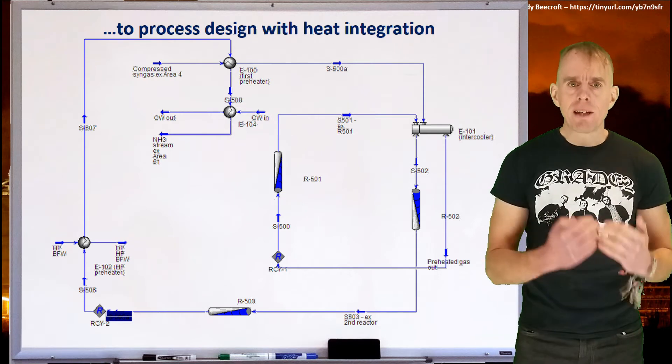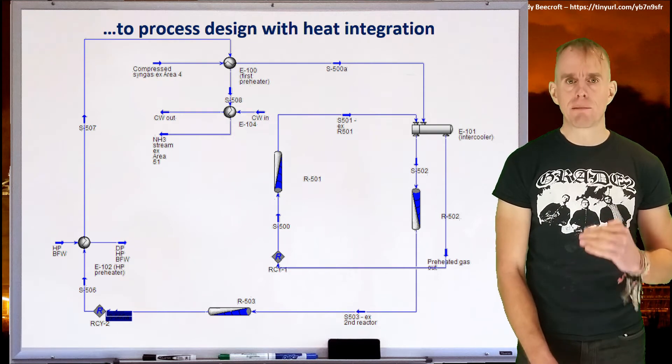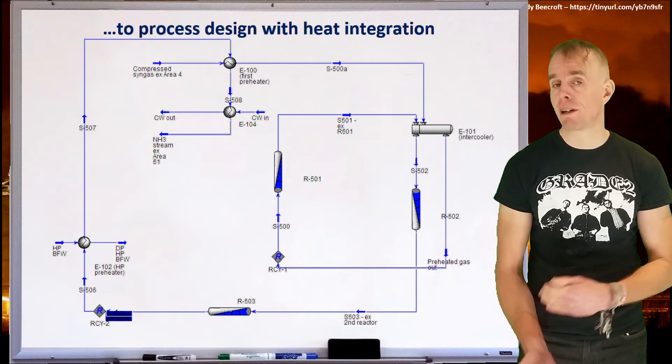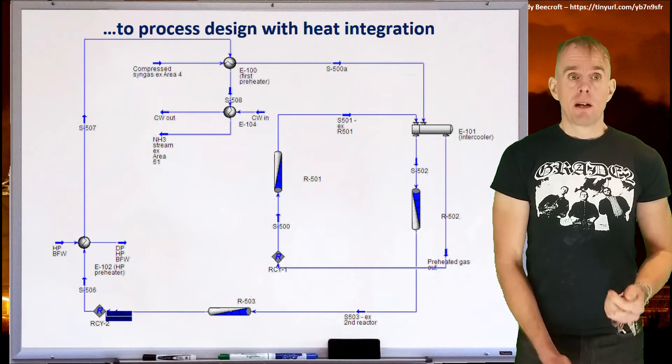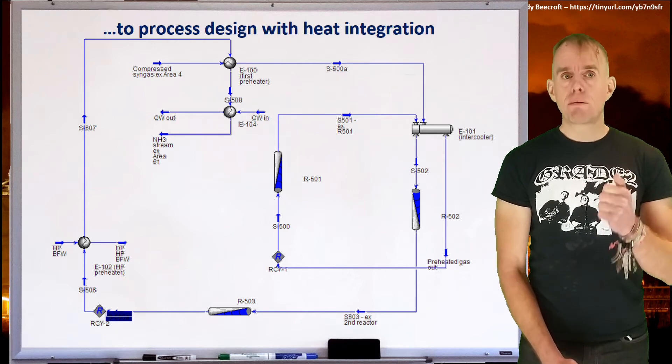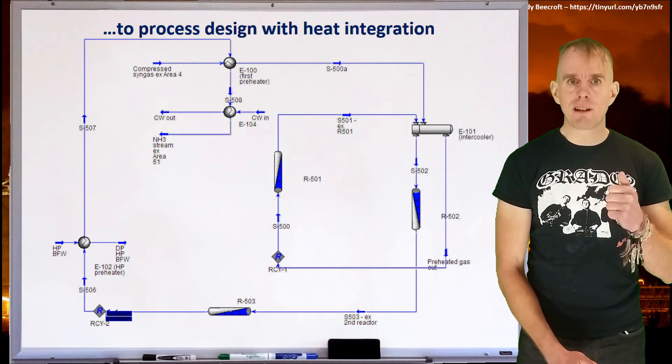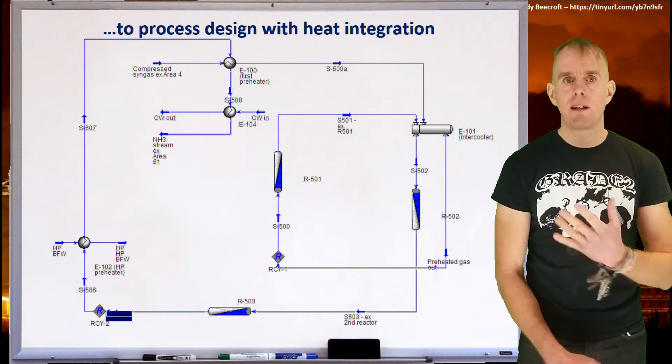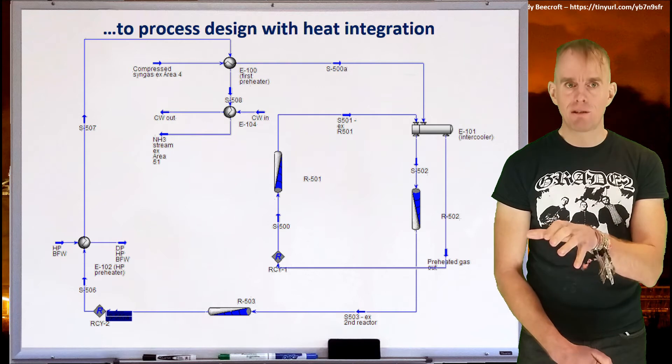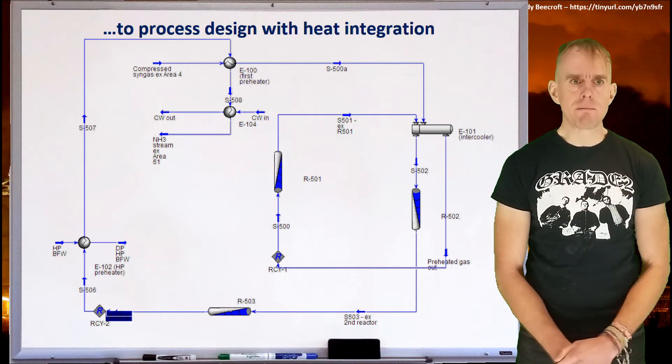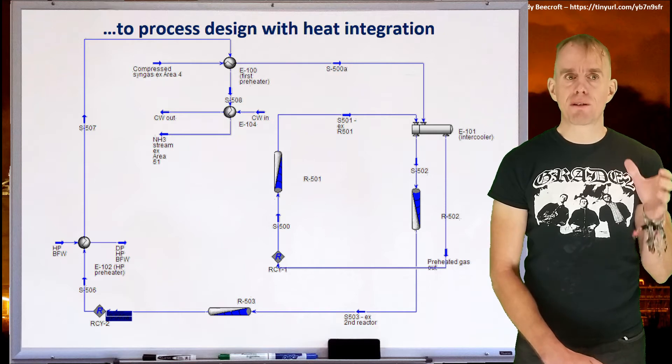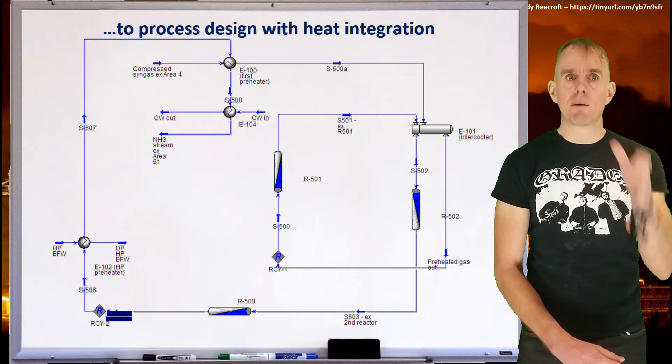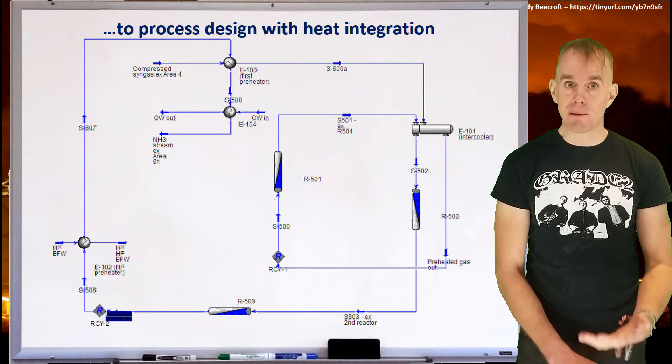So we go into the first packed bed, R501. At the exit of R501, the temperature of the reacting mixture is hot, and we need to cool it down. Otherwise, we're not going to be able to proceed with the reaction any further, because equilibrium has been attained. So that second feed preheater also serves as a reaction product cooler, because we're taking heat from the reaction products and using that to preheat the reaction feedstock. So we've got some heat integration there. And so by the time the reactor effluent from R501 has been through this heat exchanger, it is not in equilibrium anymore. And so we can go into a second packed bed and proceed with the chemical reaction.